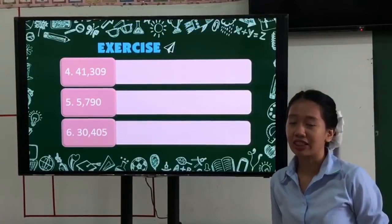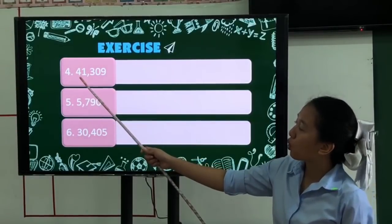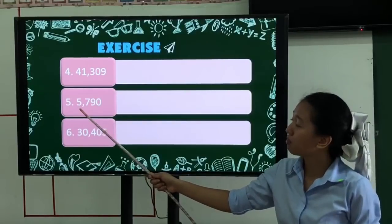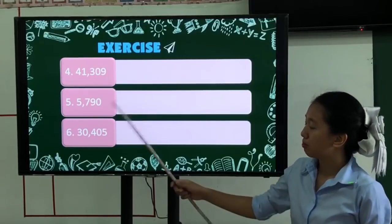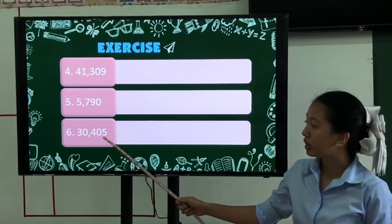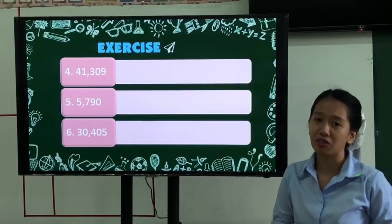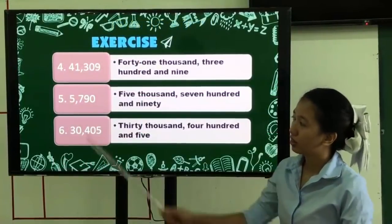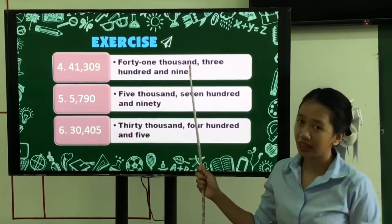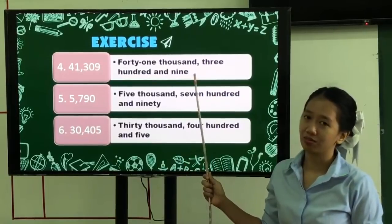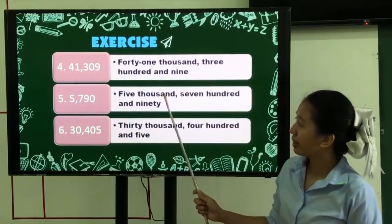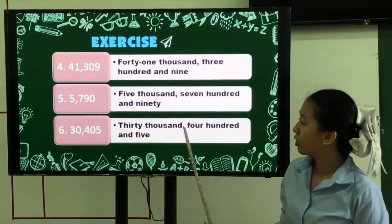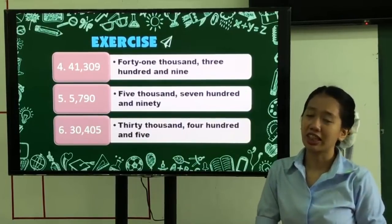Let's continue our exercise from 4 to 6. Number 4: 41,309. Number 5: 5,790. Number 6: 30,405. I will give you again 5 minutes to answer. Now let's check your answers. Number 4: 41,309. Number 5: 5,790. Number 6: 30,405. Those are the answers for 4 to 6.